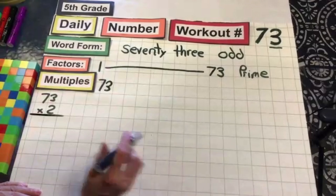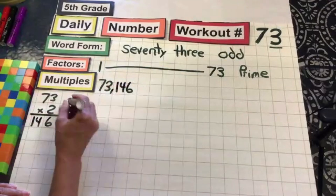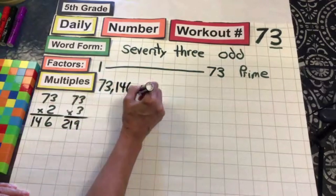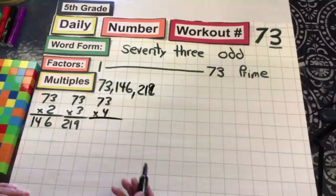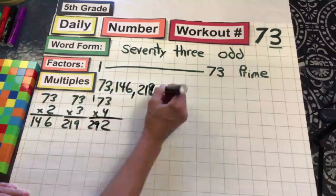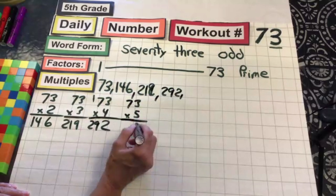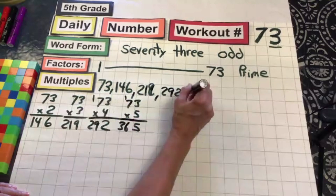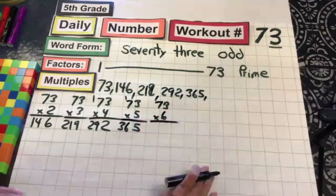This is great practice for our facts. Two times three is six. Two times seven is 14. So we have 146. Three 70s. Three times three is nine. Three times seven. Five times seven is 35.